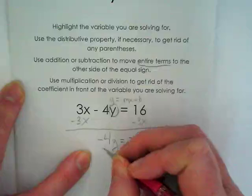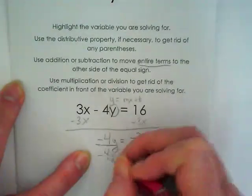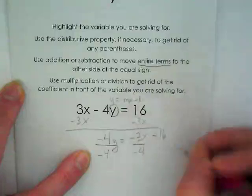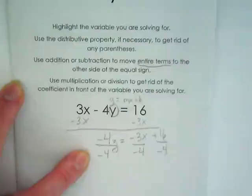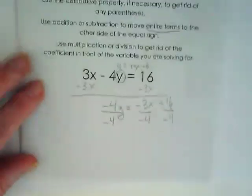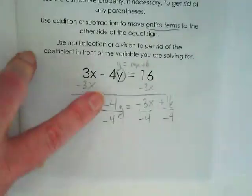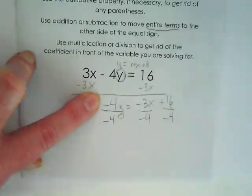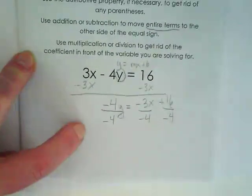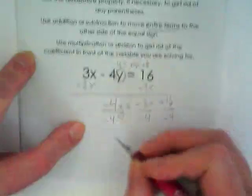Not just 4y like I tried to say, but we have a negative 4 there. So we are going to divide every single term here by negative 4. Anything divided by itself is equal to 1. That leaves us with a y.